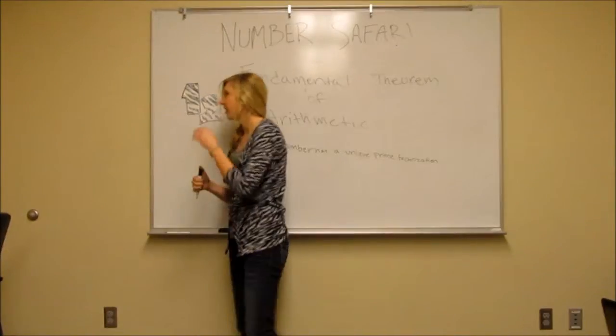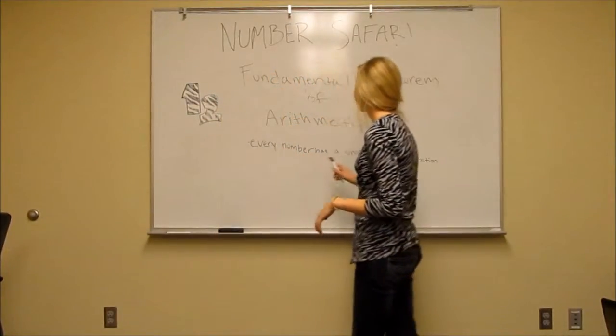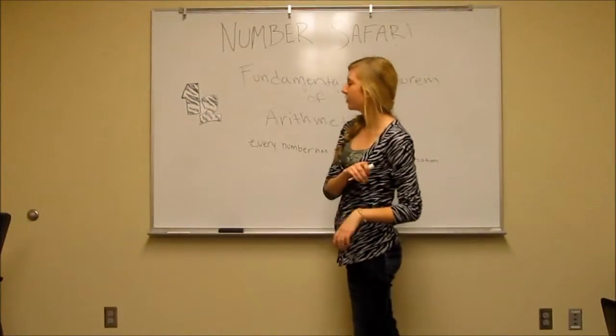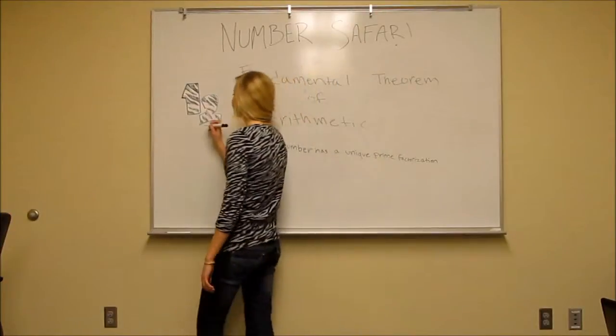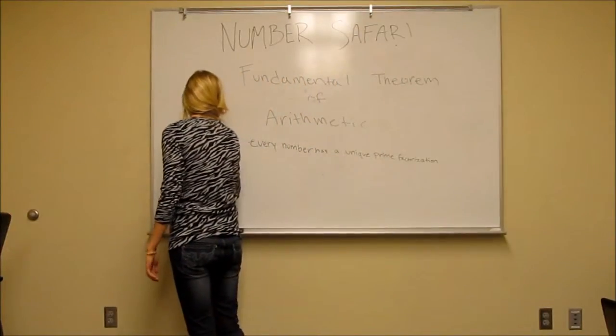So if we look at the number 12, in order to find its unique prime factorization we're going to first divide it by 2. So 12 divided by 2 is 2 and 6.